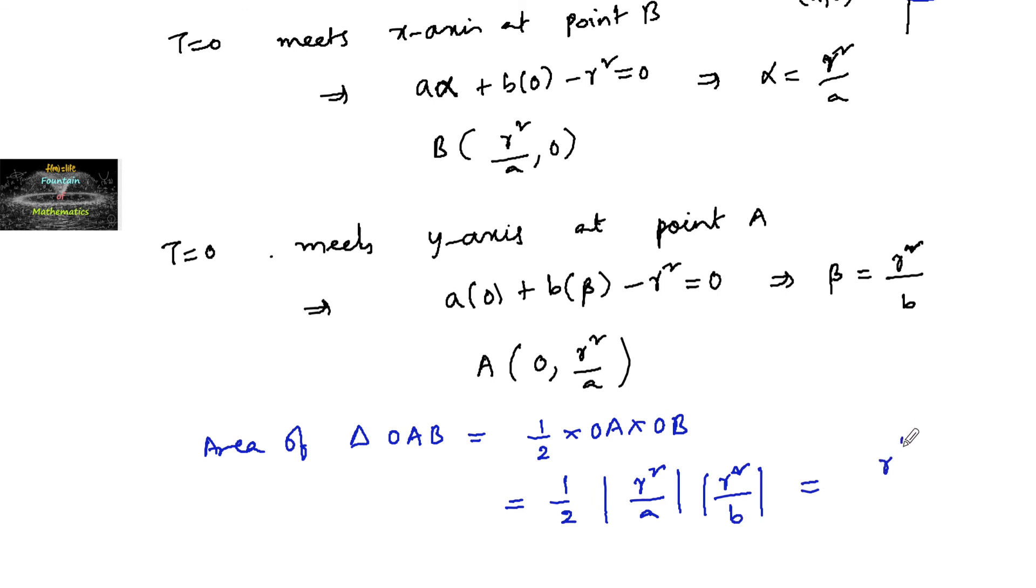So that is r⁴ divided by 2, we can take mod ab, 2 times mod ab.